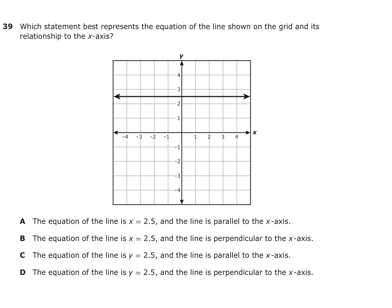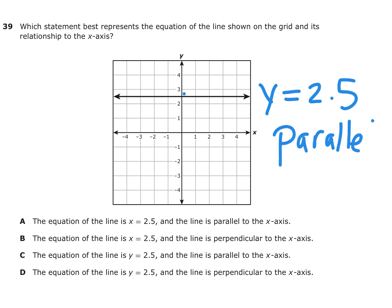Number 39: Which statement best represents the equation of the line shown on the grid and its relationship to the x-axis? The x-axis is horizontal, and this line is horizontal, crossing the y-axis somewhere between 2 and 3 — it looks like y equals 2.5. Since it's a horizontal line at y equals 2.5, it is parallel to the x-axis. Answers A and B say x equals 2.5, which would be a vertical line, so those are wrong. C and D both say y is 2.5 — one is parallel and one is perpendicular. We're looking for parallel, so the answer is C.